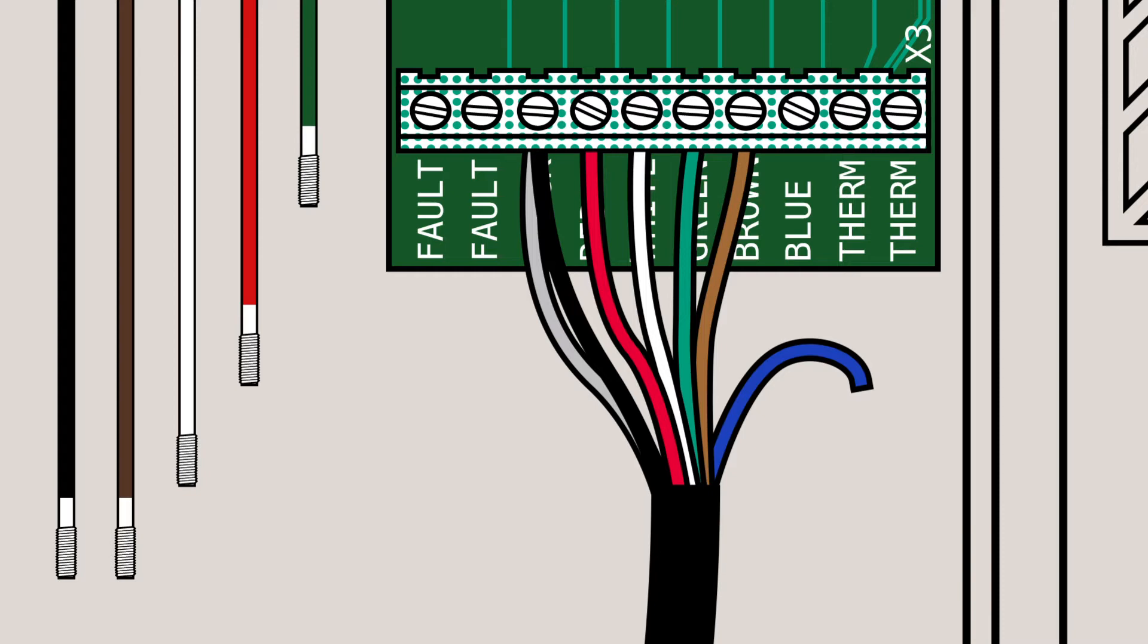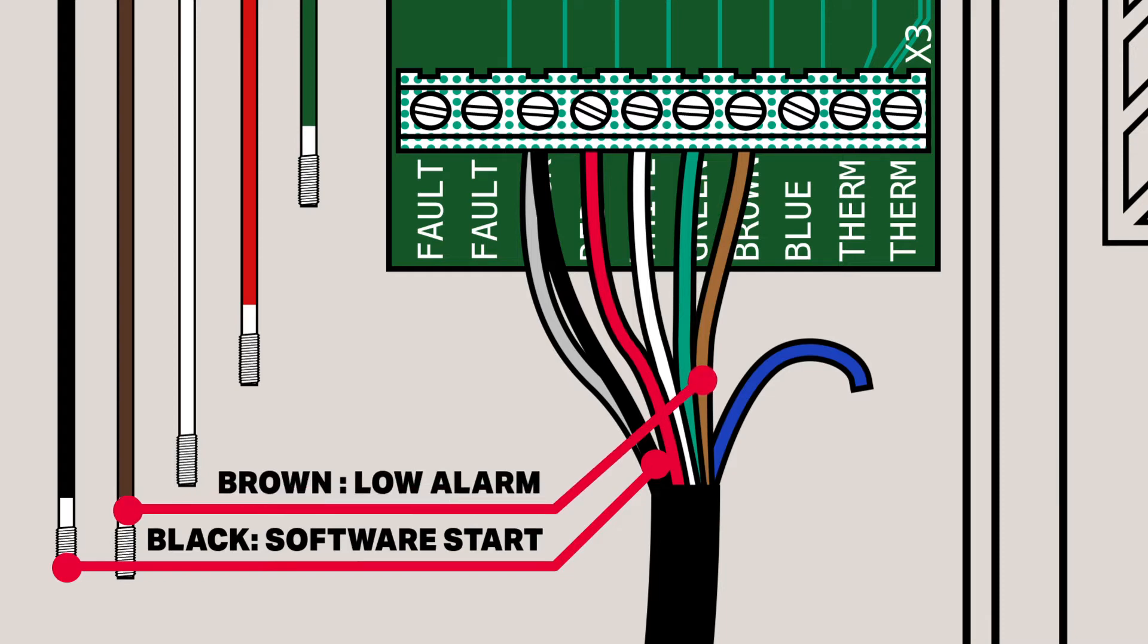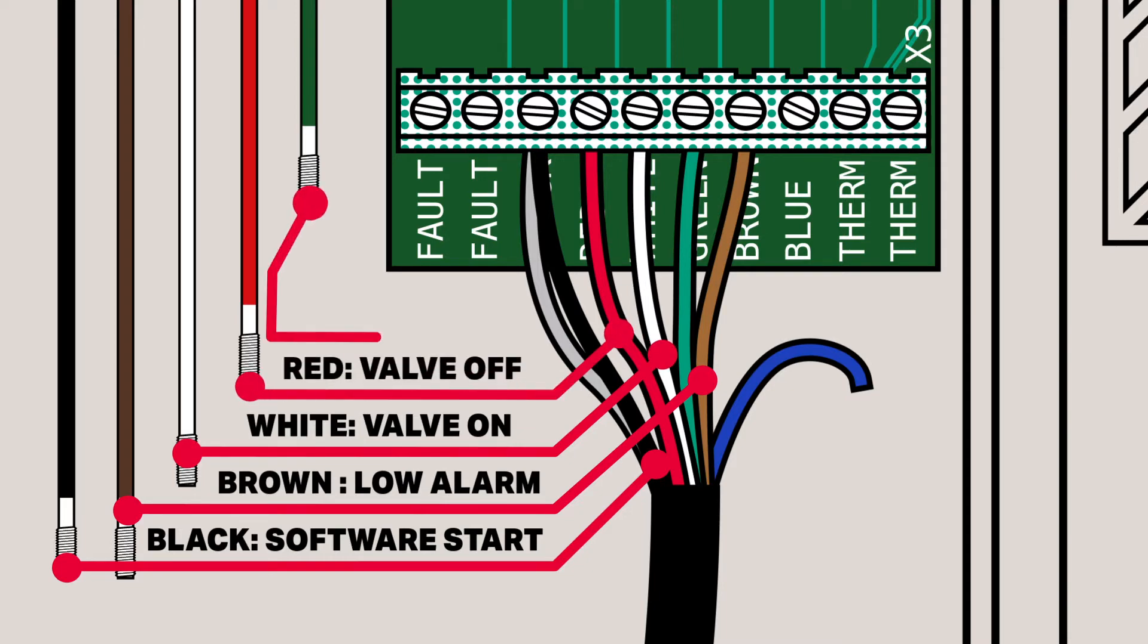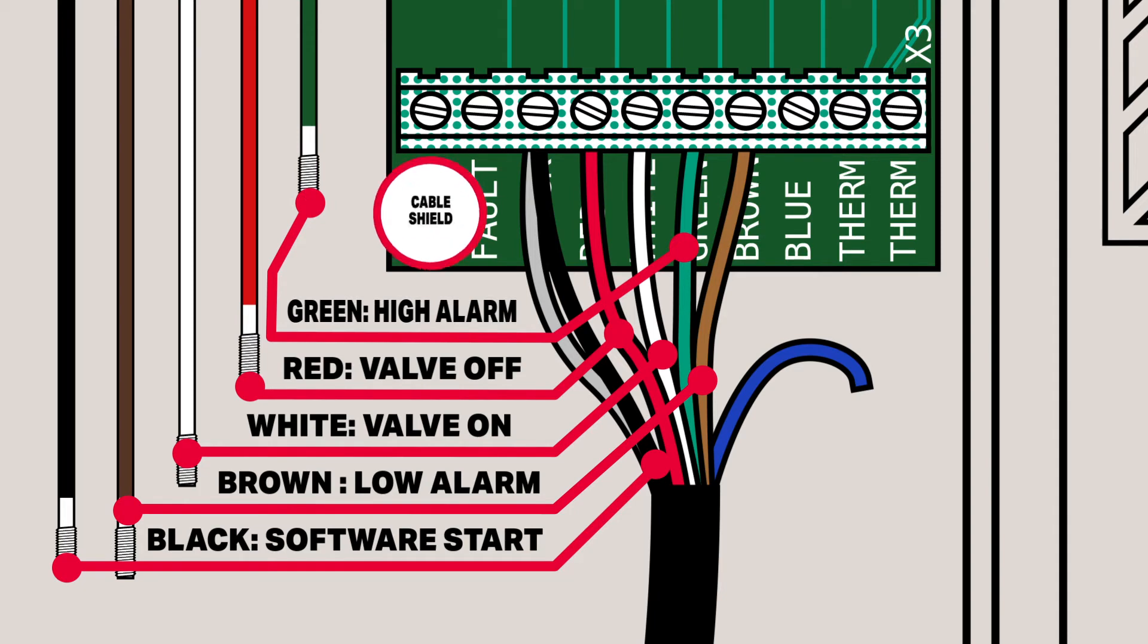From the longest rod to the shortest, the black is the software's start switch and needs to be as long or longer than the brown rod. The brown rod is the low alarm. The white turns the valve on, the red turns the valve off, and the green is the high alarm.